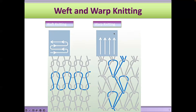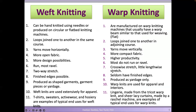If you look at a weft knit fabric, you'll see it goes in a horizontal direction — you start knitting one row and then go to the next row, next row, next row. But warp knitting is a vertical type of knitting, done vertically. If you follow one loop, it goes in an almost zigzag pattern in a vertical direction.